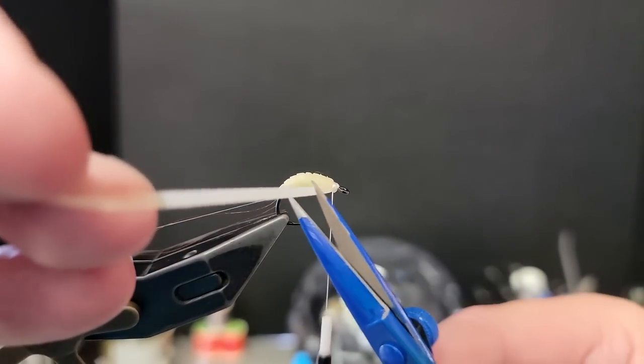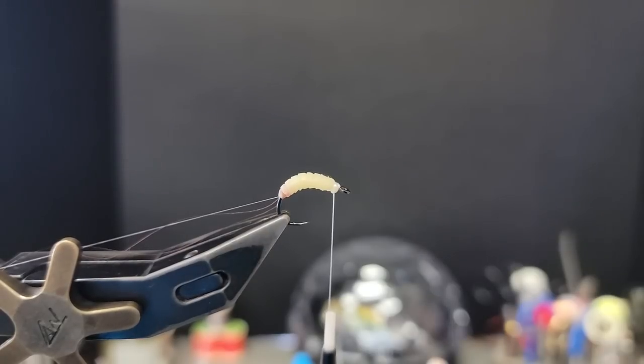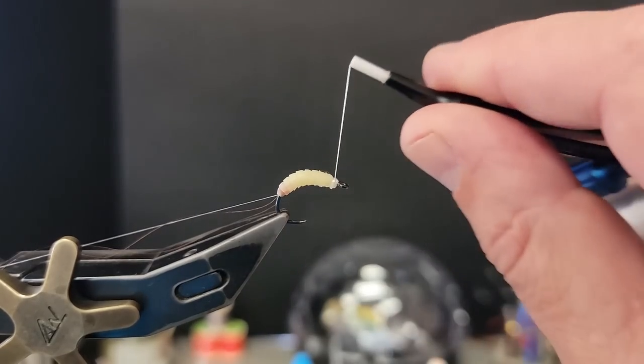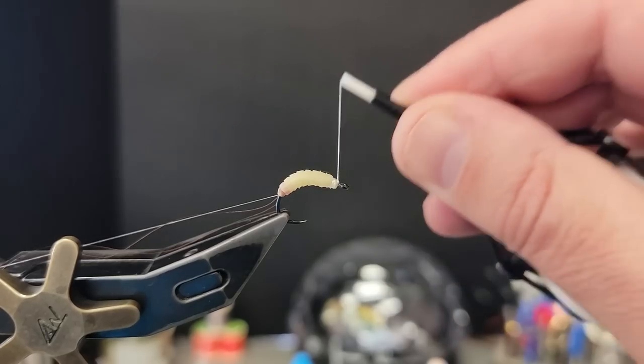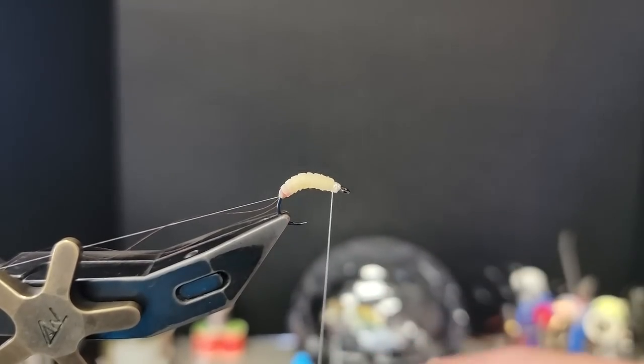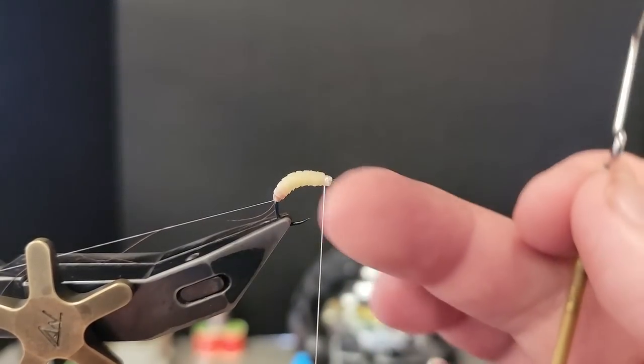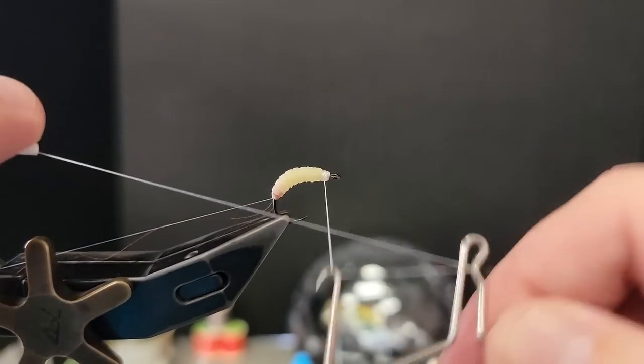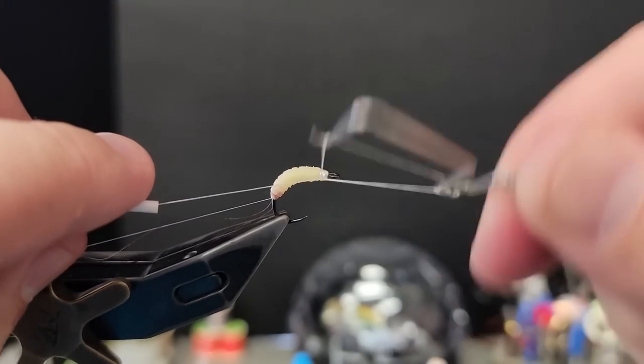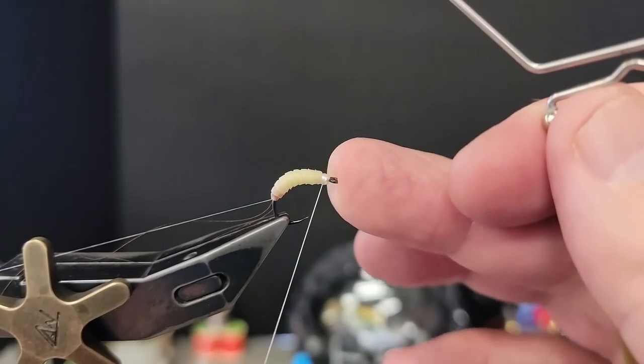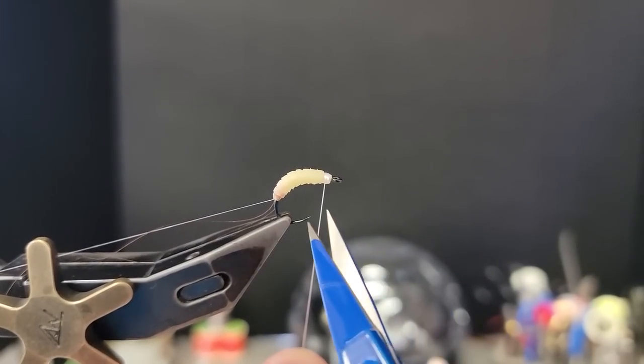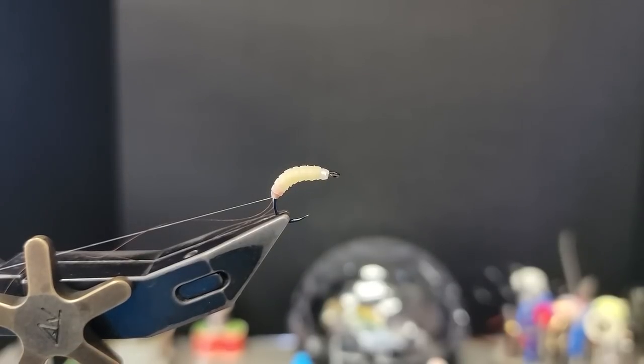And I always like to do a few wraps behind, go forward, pull it back a few wraps behind, or in front I guess would be the proper term. So you can see the segmentation, it's kind of coming out nice. You can do wax worms, which I'll do in the future. You can do little brancas, which is the great fall caddis, October caddis.